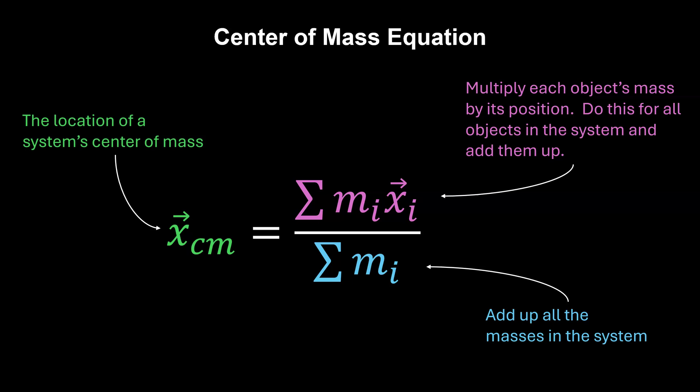Then, in the denominator, add up all of the masses in the system, divide, and you'll have the location of the system's center of mass along the axis.